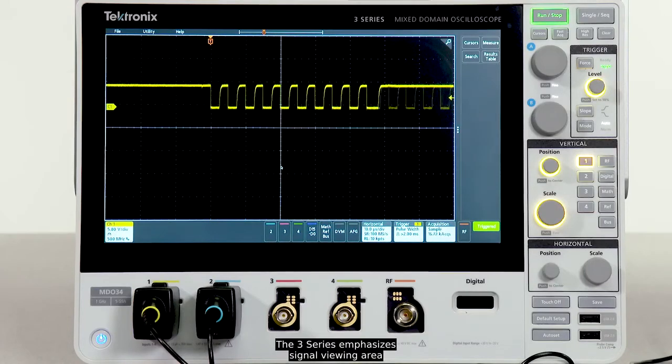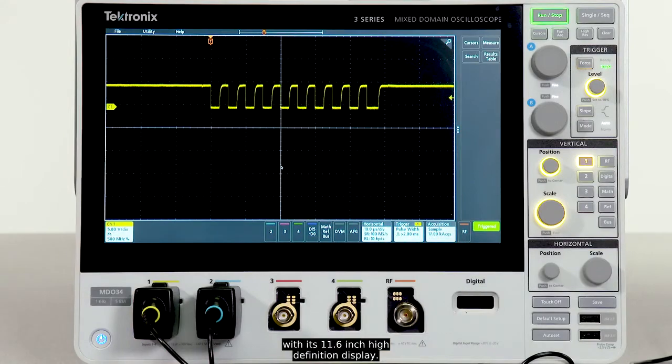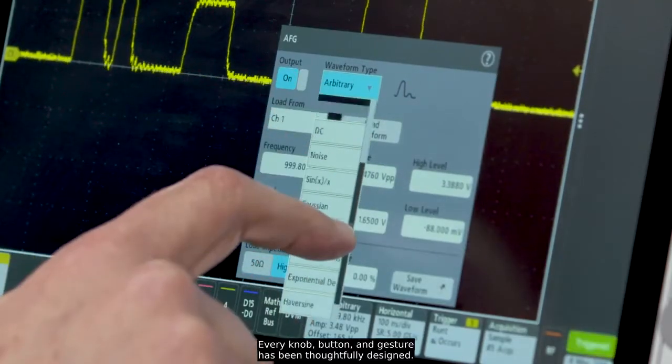The 3 Series emphasizes signal viewing area with its 11.6 inch high-definition display. Every knob, button, and gesture has been thoughtfully designed.